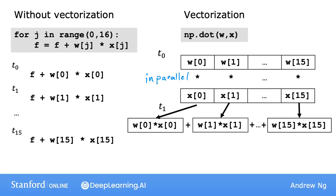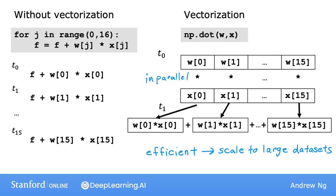This means that code with vectorization can perform calculations in much less time than code without vectorization. And this matters more when you're running learning algorithms on large datasets or trying to train large models, which is often the case with machine learning. That's why being able to write vectorized implementations of learning algorithms has been a key step to getting learning algorithms to run efficiently and scale well to the large datasets that many modern machine learning algorithms now have to operate on.